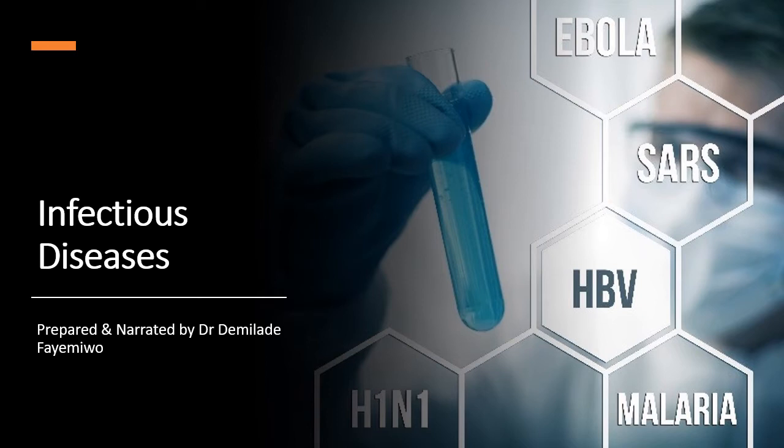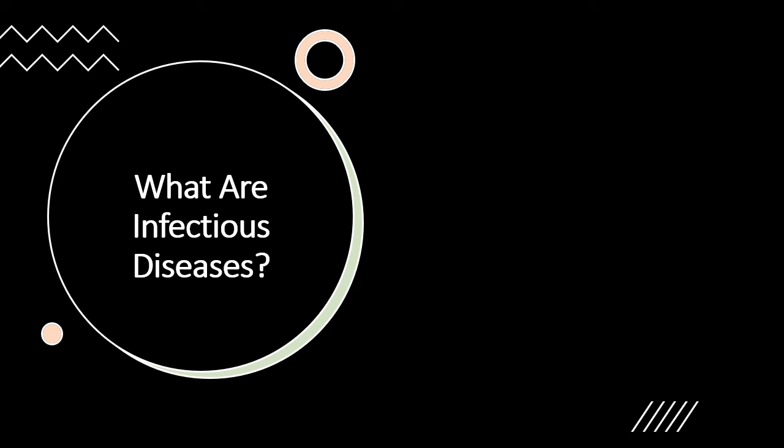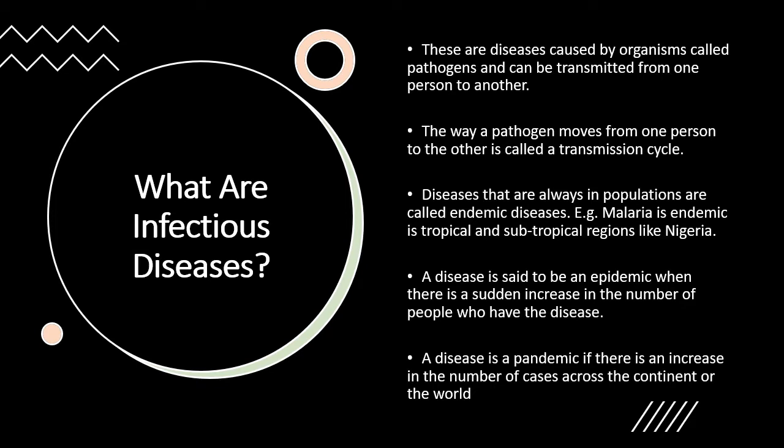Infectious Diseases — Chapter 10 of the AS Biology syllabus. So the first question is: what are infectious diseases? When I ask students this, they always say the flu, because the last time their friend sneezed next to them, they got a cold the next day. Well, that's a good example. But infectious diseases, if you want to be very biological in your definition, are diseases that are caused by organisms which we call pathogens. Pathogens come into the body to wreak havoc, and they can be transmitted from one person to another.